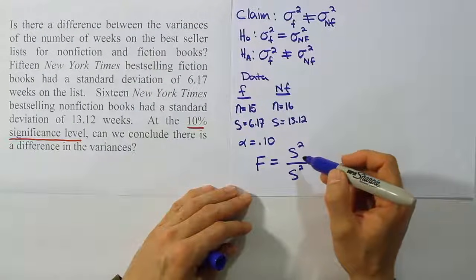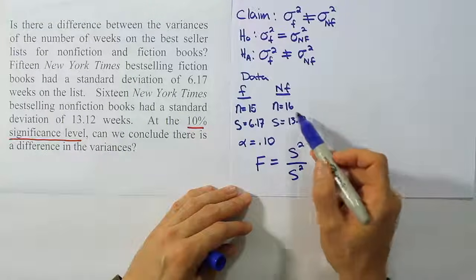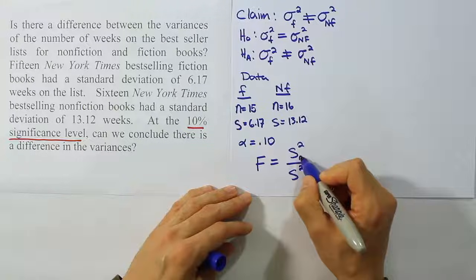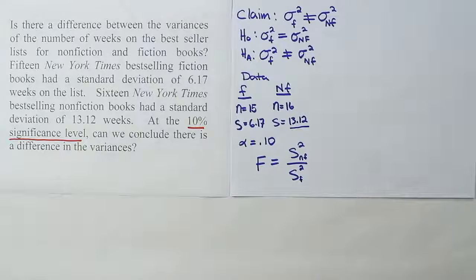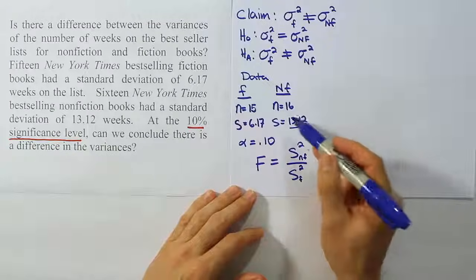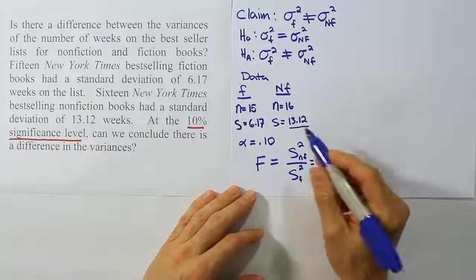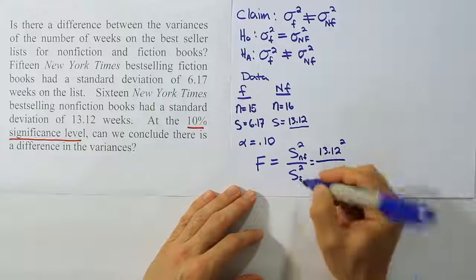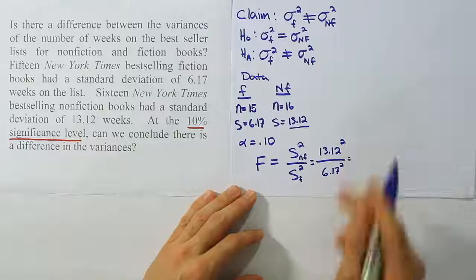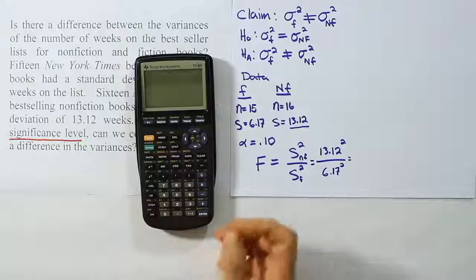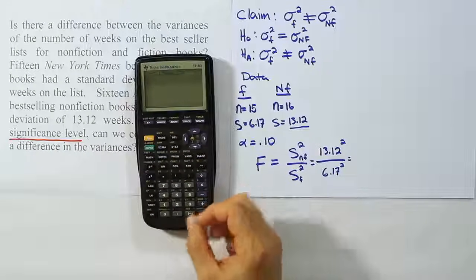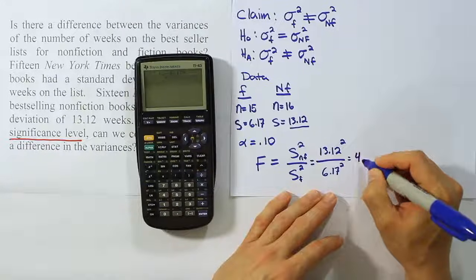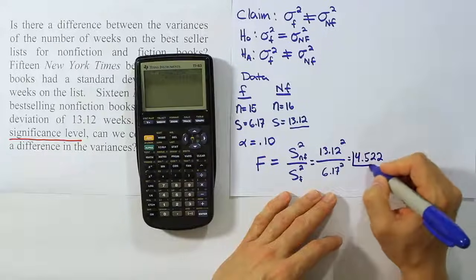The rule we're going to use is very simple here. We're going to put the one that had the larger sample standard deviation or variance on top. So in this case, the non-fiction one is going to go on top and the fiction one is going to go on the bottom. So our numerator will be non-fiction because this value is the bigger of the two. We're going to use that procedure because our tables are set up to always have a right-tailed test in this procedure. And so we want to make sure that this is always larger than one, this ratio. And by putting the larger number on top, we'll guarantee that. So let's just plug in the numbers now. This is a standard deviation, so we will have to square it. It will be divided by another standard deviation, which will also have to be squared. Let's do that work in our calculator and see what that gives us. So we'll have 13.12 squared divided by 6.17 squared. When I do that, I get the answer 4.522. That is my F-test statistic.